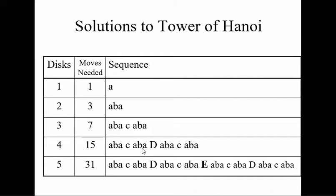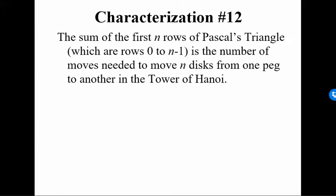And we could iterate this process one more time. If there's five disks, it's 15 plus 1 plus 15. So characterization 12 of Pascal's triangle states that the sum of the first n rows of Pascal's triangle, which would be rows 0 through n minus 1, is the number of moves needed to move n disks from one peg to another in the Tower of Hanoi.